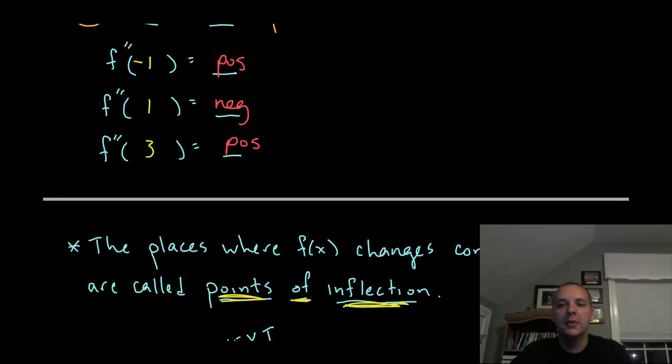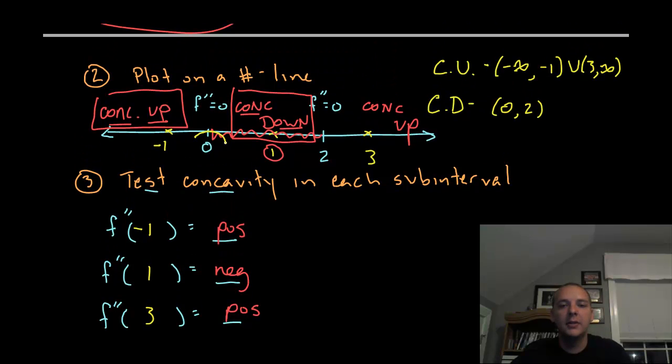For this video, without going through a lot of details, zero would be called a point of inflection (POI) because it changes from up to down. And then also, two would be a point of inflection, because that's a place where it changes from concave down to concave up.